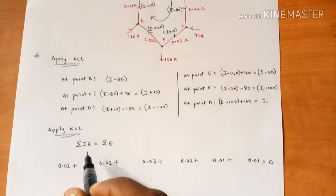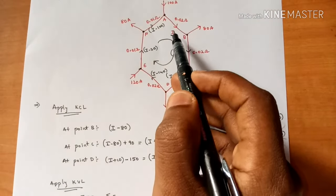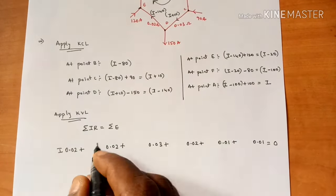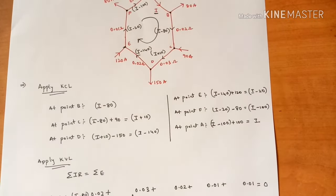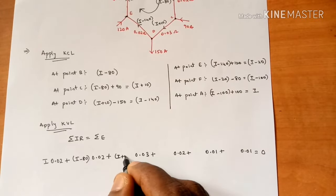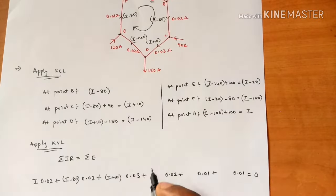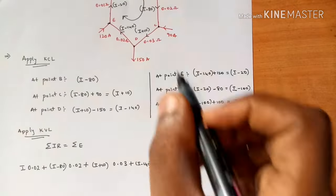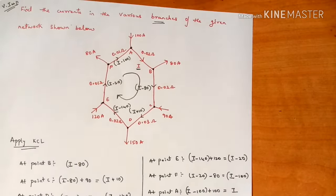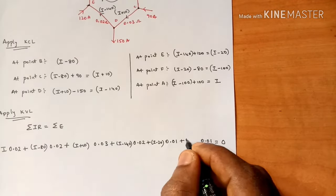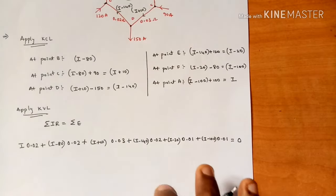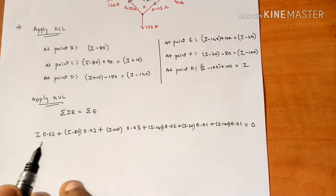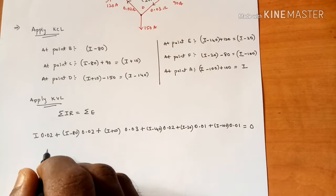Now we multiply each resistance by the current flowing through it. For the first resistance, current is I; second resistance, I minus 80; third, I plus 10; fourth, I minus 140; fifth, I minus 20; and the last branch, I minus 100. We then simplify to find the single unknown I.